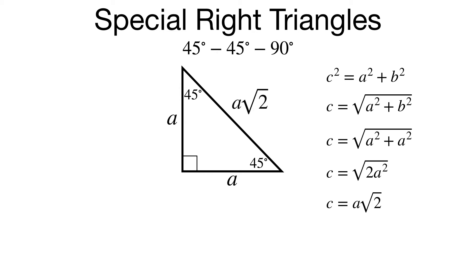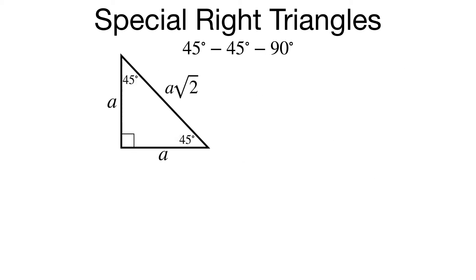Which means that whenever I have a 45-45-90 triangle, as long as I know a leg length, I can find both other sides of the triangle. Leg is a, hypotenuse is a times the square root of 2. So let's look at some examples.